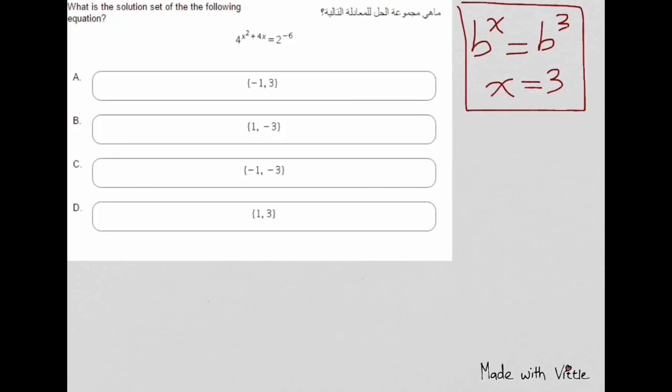This is the key point for solving our question. In this question we have 4 to the power of x squared plus 4x which equals 2 to the power of negative 6. In order to apply our previous rule, we must make 4 equal to 2, so we'll write 4 as 2 squared. So our equation will be written as 2 to the power of 2 times the term x squared plus 4x, which equals 2 to the power of negative 6.